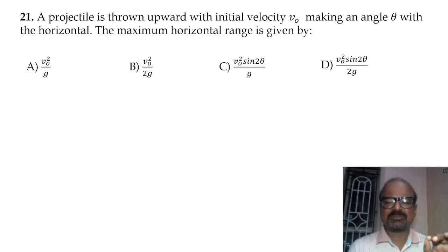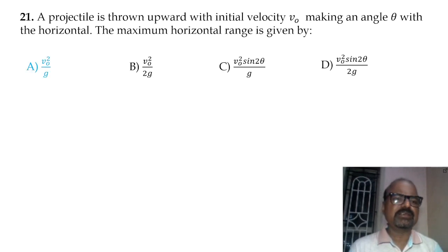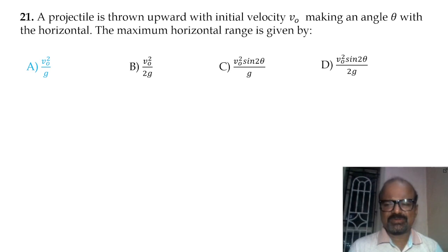Since sine 2-theta is maximum when theta is 45 degrees, sine 90 equals 1, so the maximum range is v0 squared divided by g.